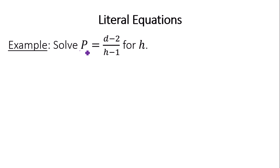So I think the best approach here would be to just make a proportion. I'd have P times H minus 1 is equal to D minus 2 times 1, so just D minus 2.